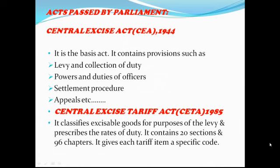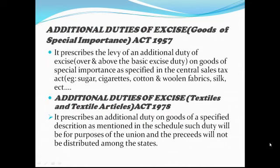The next law is the Central Excise Tariff Act, 1985. It classifies excisable goods for the purpose of levy and prescribes the rates of duty. It contains 20 sections and 96 chapters, and gives each tariff item a specific code. Tariff items are classified under appropriate chapter heads and subheads for the purpose of charge of duty. The next act is the Additional Duties of Excise (Goods of Special Importance) Act, 1957. It prescribes the levy of an additional duty of excise on goods of special importance as specified in the Central Sales Tax Act.